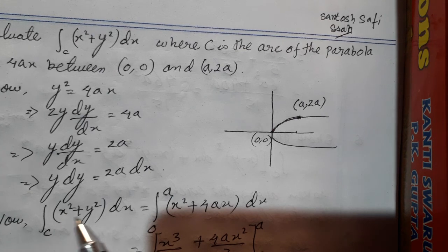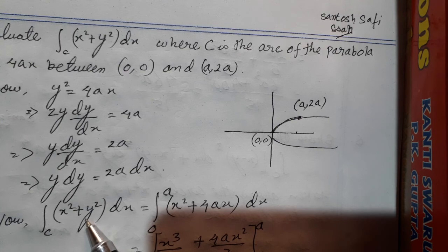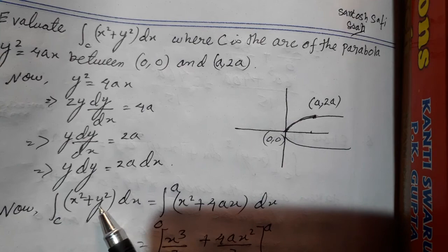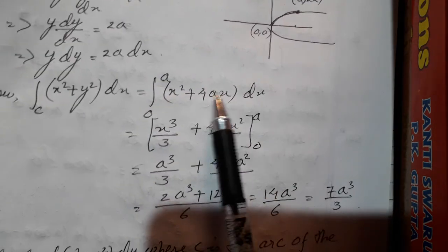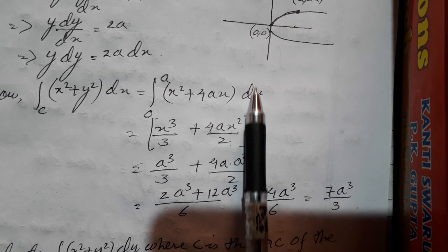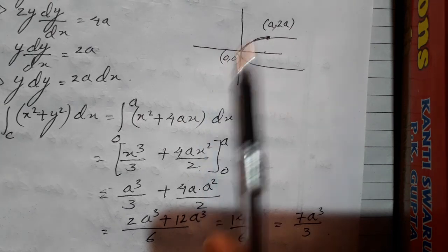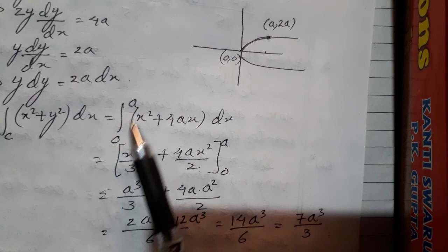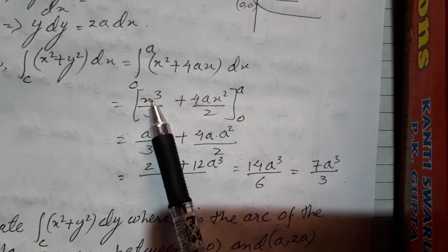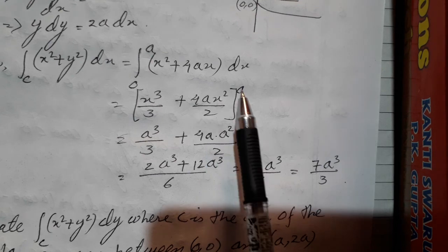Now the integration along C of x squared plus y squared dx. In place of y squared, let me put the value from the curve: y squared equal to 4ax. So I have here x squared plus 4ax. We are integrating with respect to x. Looking at only the x-coordinate, the limit is from 0 to 8. So we are integrating x squared plus 4ax dx from 0 to 8.